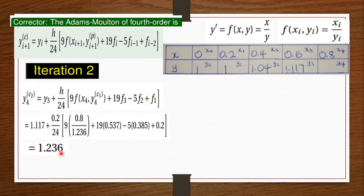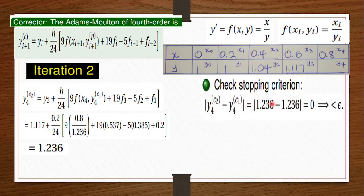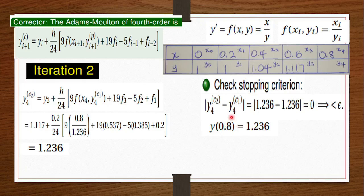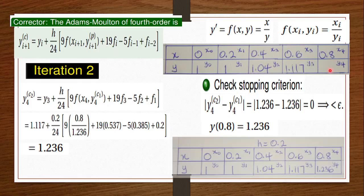Since the correction converged, we take 1.236 as our final answer for y at x = 0.8, and place this value into our table for y4. This completes our final table.